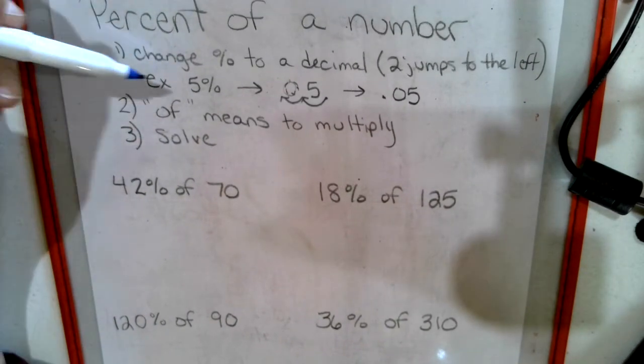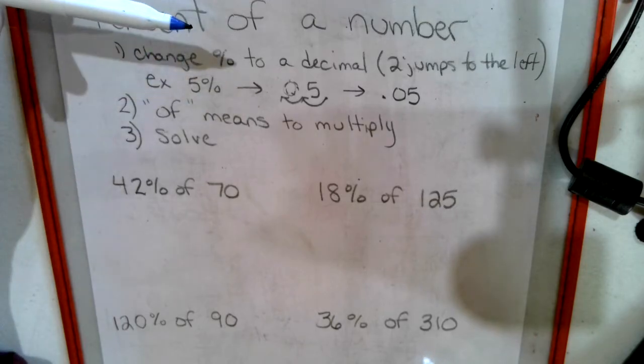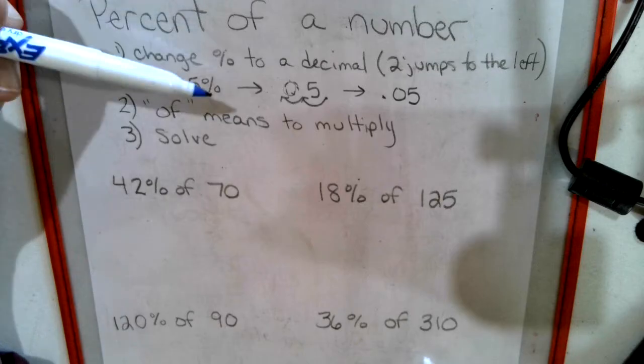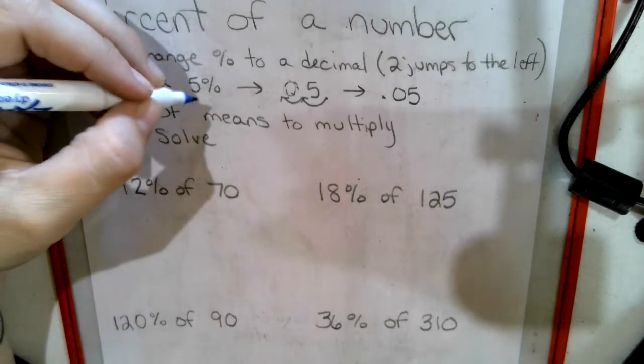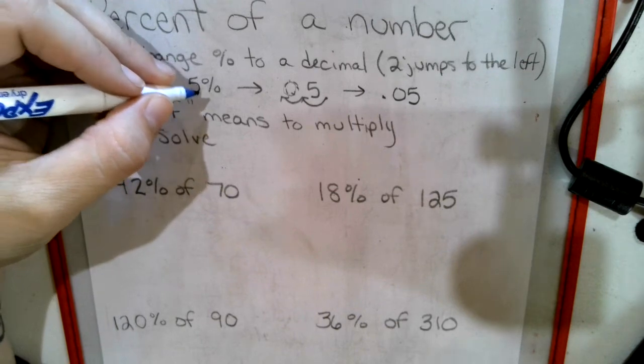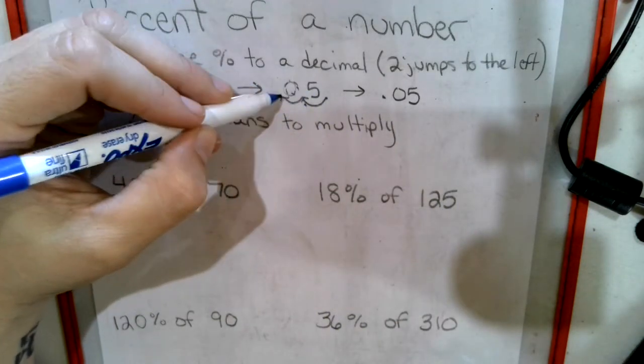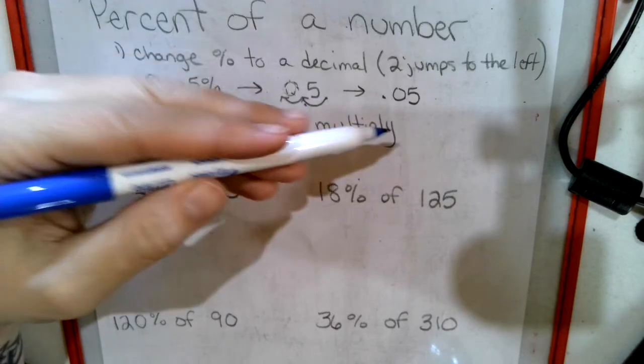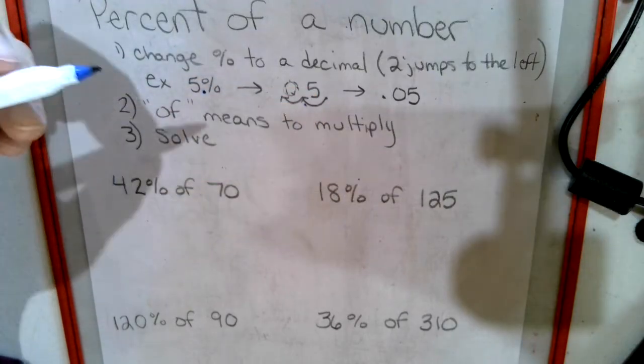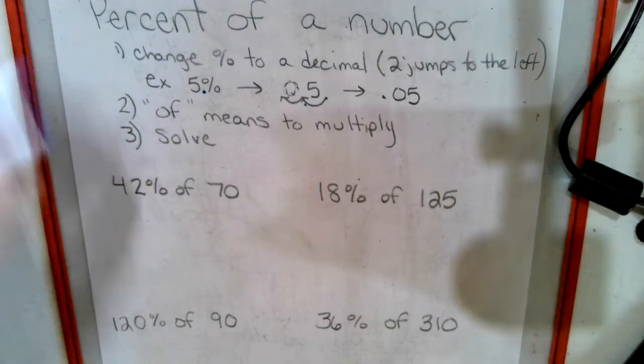Percent of a number - we're going to change the percent into a decimal by going two jumps to the left of the number. For example, five percent. The decimal, if it doesn't have one in it, always falls at the end of a number. We're going to jump two spots, one, two, and five percent becomes 0.05. And 'of' means to multiply. Then we're going to solve it.